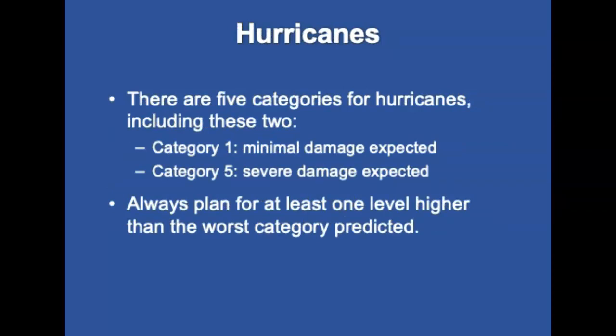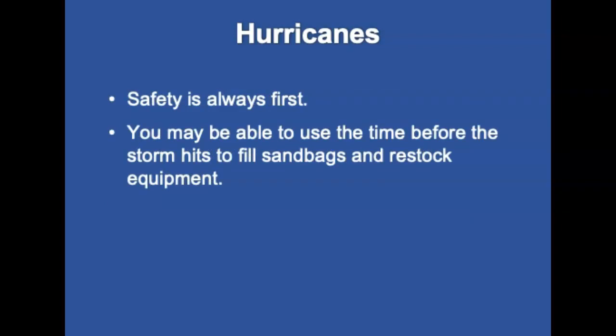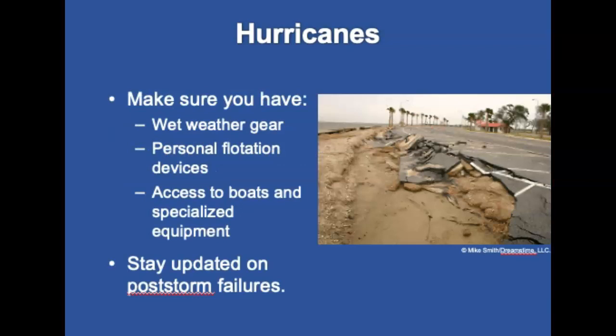For hurricanes, there is usually some type of warning. There are five categories, with category five winds greater than 155 miles per hour causing severe damage. Always plan for at least one level higher than the worst category predicted. Safety is always first — you cannot help if you're injured. If told to hunker down, do it. You may be able to fill sandbags and restock equipment before the storm hits. In addition to PPE, make sure you have weather gear and personal flotation devices. Most patient care will come after the storm. Stay updated on post-storm failures such as levees being overcome or bridges and roads that are flooded. If you don't know the depth of the water, do not drive through it.